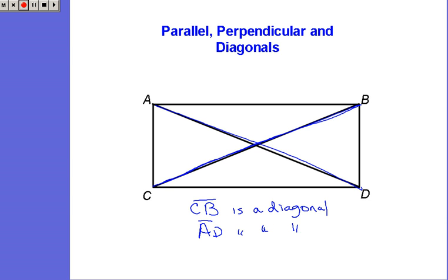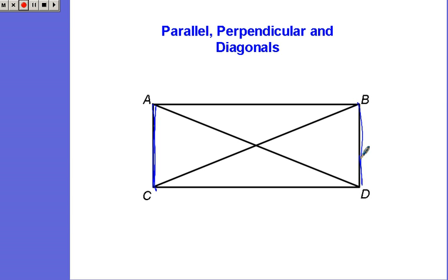All right, if you still need some more examples, some more explanation, keep watching. We could say that AC and BD are parallel to each other. AC is parallel to BD.